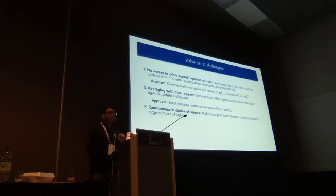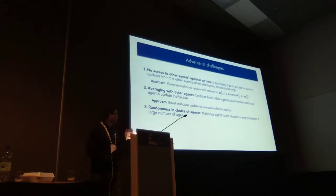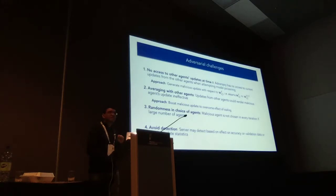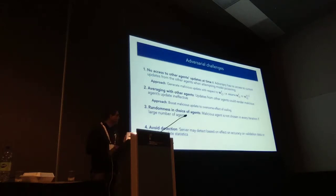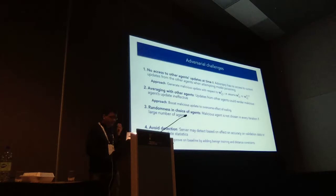The third thing is that there could be randomness in the choice of agents, so when there's a very large number of agents, the malicious agent may not be chosen in every iteration. I'm going to largely sidestep this issue — I have some backup slides which show it still works with randomness in agent choice. And the last thing the malicious agent wants to do is avoid detection. Simple sanity checks the server could use include checking accuracy of the malicious model on validation data, or looking at weight update statistics to detect a particular agent as malicious. The approach here is to add more sophisticated methods — training on benign data and distance constraints.